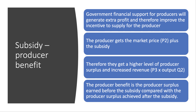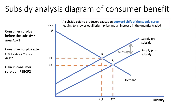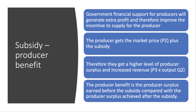For the supplier, you need to distinguish between consumer benefit and producer benefit. Typically, financial support for suppliers will generate extra profit and therefore increase the incentive to supply. The producer will get the market price P2 plus the subsidy. So the price falls to P2 because of the subsidy, but that's not necessarily the price the producer will get. This is how you have to develop your diagram — the producer gets the market price P2 plus the subsidy, giving them extra revenue and increased producer surplus. That's the essence of the producer benefit.